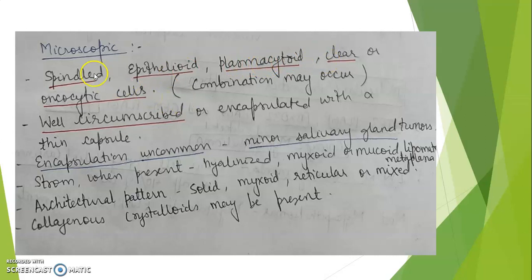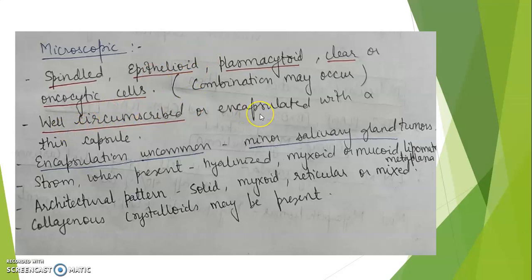The tumor may show an abundance of spindle cells, epithelioid, plasmacytoid, clear cells, or oncocytic cells, but combinations of these can be seen. The tumor is well circumscribed and encapsulated with a thin capsule, and is composed of spindle-shaped or epithelioid cells depending upon the type.